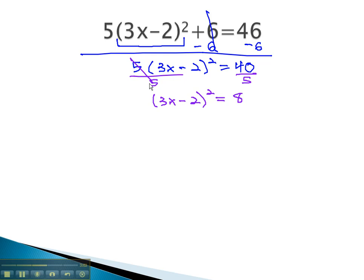We can now get rid of the square by taking the square root of both sides. We're left with 3x - 2 equals, and you might notice that we cannot take the square root of 8 evenly.